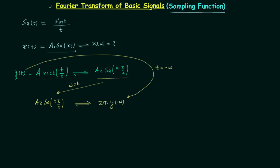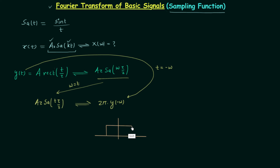First we will plot the waveform of the Fourier transform and then find a0 and k. The waveform of the rectangular function y(t) is not very difficult to plot. The amplitude is equal to a, the time instant on the left is minus τ/2, and the time instant on the right is τ/2. This is the waveform of the rectangular function y(t).